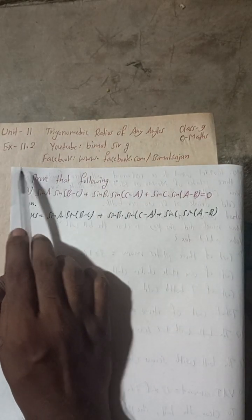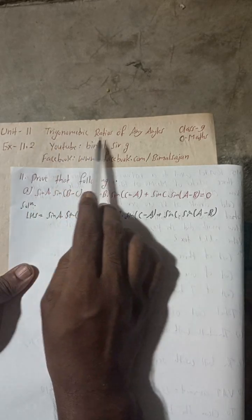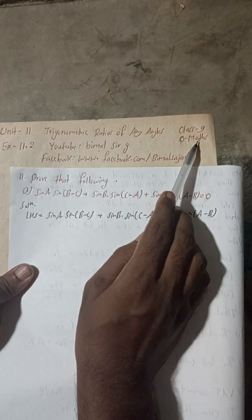This is question number 11A of exercise 11.2, Unit 11, Trigonometric Ratios of Any Angles, Class 9 Optional Maths.